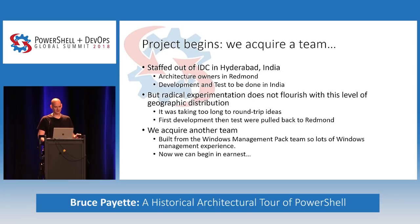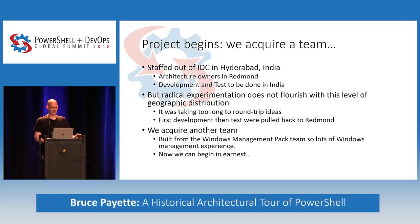Now that we have better tools for communication — GitHub and so forth — geographically distributed development might succeed where it didn't work for us then. So anyway, that didn't work. We first pulled back development with the idea that tests could still be there, but even that wasn't working well because things were changing so fast. We went shopping and acquired another team, built out of members from the Windows Management Pack team, which was great because they had a lot of management experience for Windows.